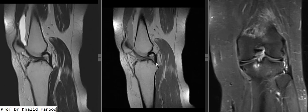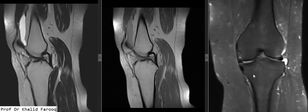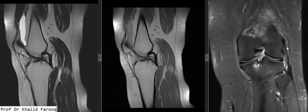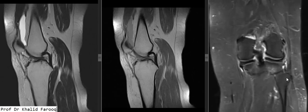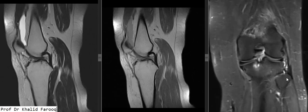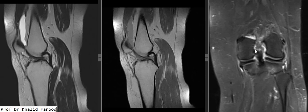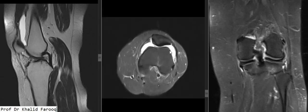The posterior cruciate ligament shows normal signals and morphology. The medial and lateral menisci, including the medial and lateral collateral ligaments, are unremarkable. On the axial fat suppression sequence, we can see joint effusion. The PCL shows normal signals and morphology.